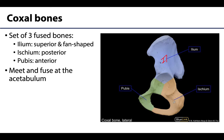Next you'll have the ischium, which is very robust — you can see the large ischial tuberosity right here, often referred to as the sit bones, and it is going to be more posteriorly placed. The smallest portion is going to be the pubis, often referred to as the pubic bone, and this is going to be the most anteriorly placed portion of the coxal bone.